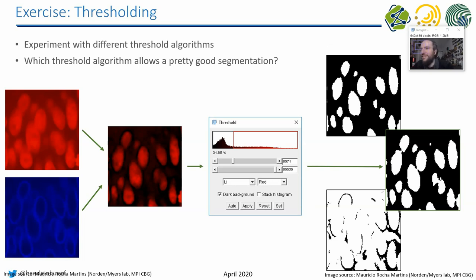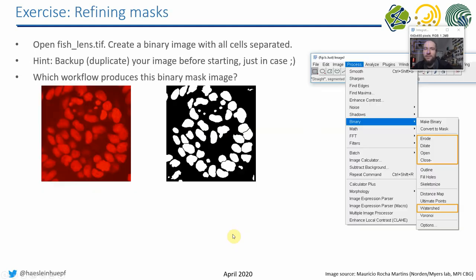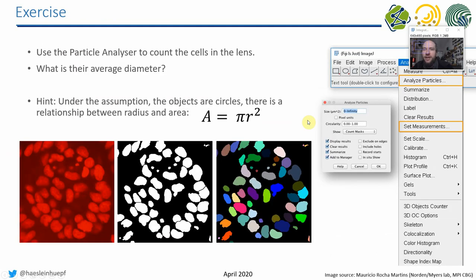Try to find a good workflow with something like three or four steps — not 20 — to go from the original image to a segmented binary image. Try different combinations of pre-processing steps before thresholding and post-processing steps for refining masks. Also take the fish lens TIF image and try to find out which sequence of operations generates a given binary image. Then apply Analyze Particles to it. As a challenge, please measure the radius or diameter of the nuclei.